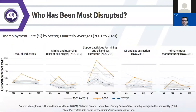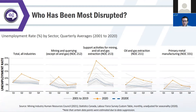That lightly touches on the 'what happened' section. There are more variables covered in our study, but those are the two higher-level ones. We've also asked: who has been greatly disrupted by the pandemic? We looked at this across several dimensions — different regions, provinces, occupations, and demographic groups.